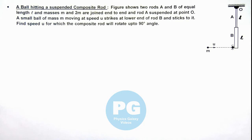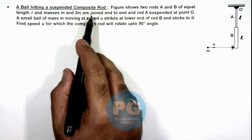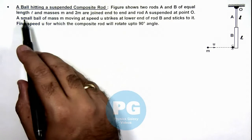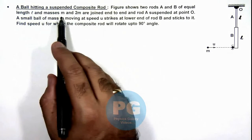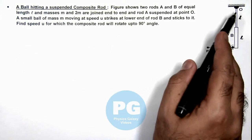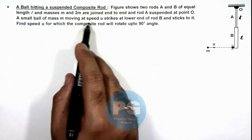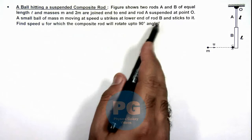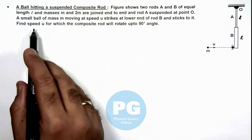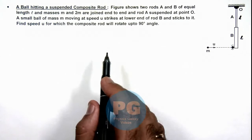In this illustration we'll discuss a ball hitting a suspended composite rod. The figure shows two rods A and B of equal length l and masses m and 2m joined end to end. Rod A is suspended at point O. A small ball of mass m moving at speed u strikes at the lower end of the rod and sticks to it. We are required to find the speed u for which the composite rod will rotate up to 90 degree angle on the other side.